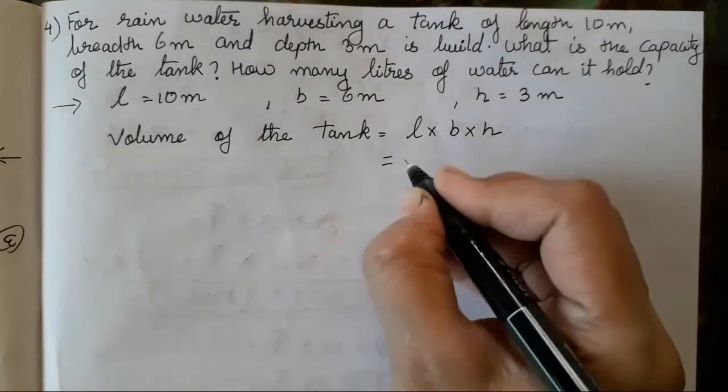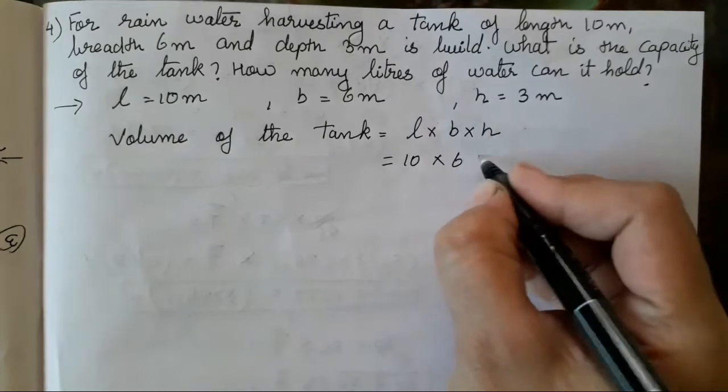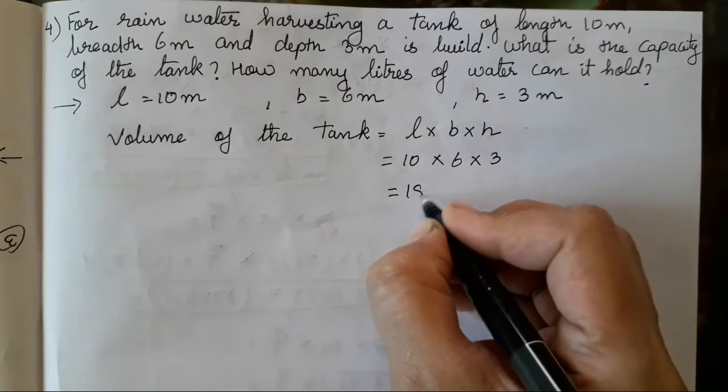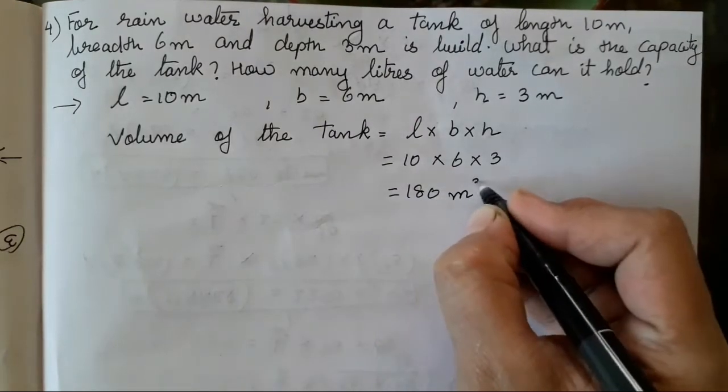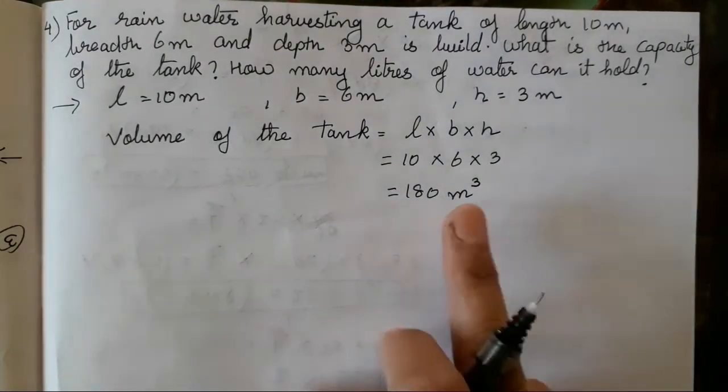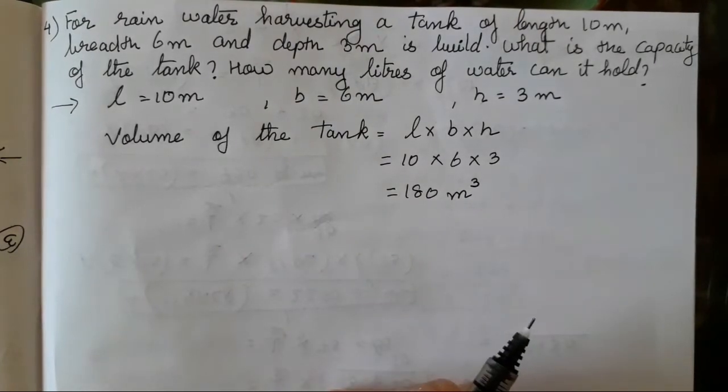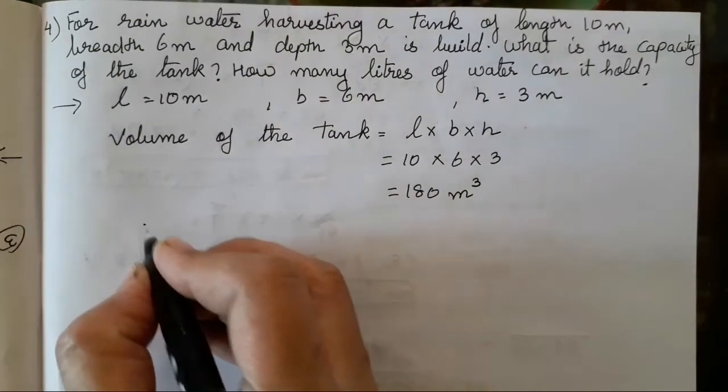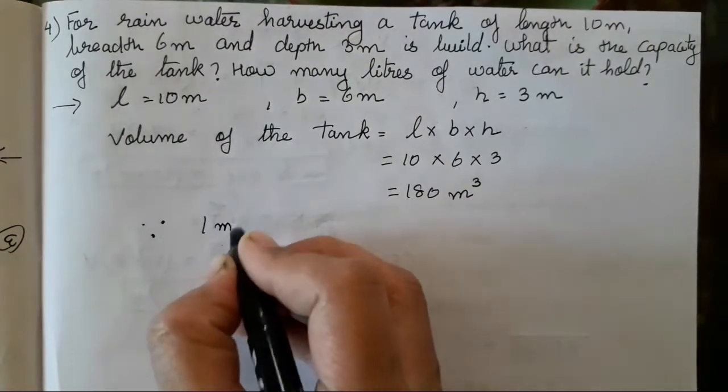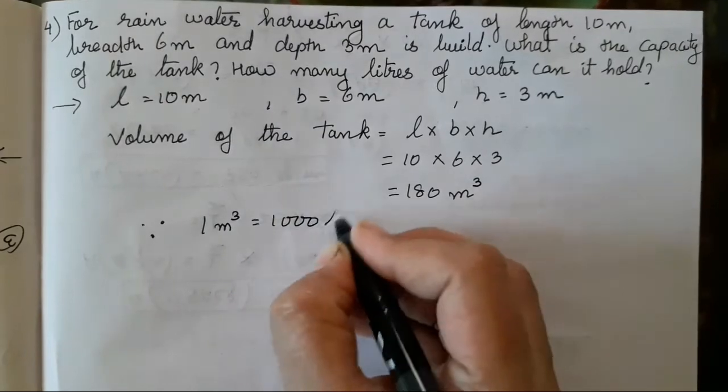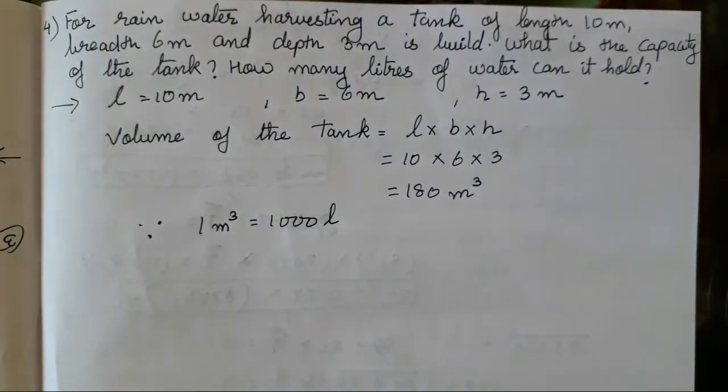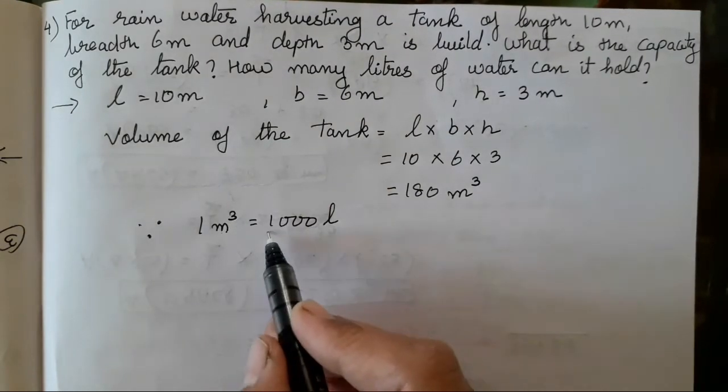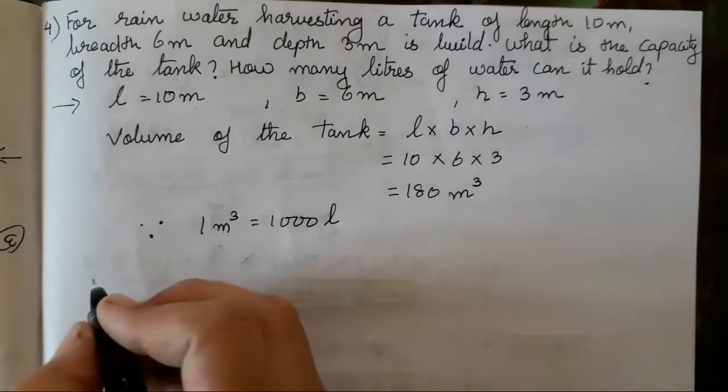Volume of the tank equals length into breadth into height. Length is 10, breadth is 6, height is 3. When you multiply it, the answer is going to be 180 meter cube. You can write cubic meter or meter cube, both are right. 1 meter cube is equal to 1000 liters.